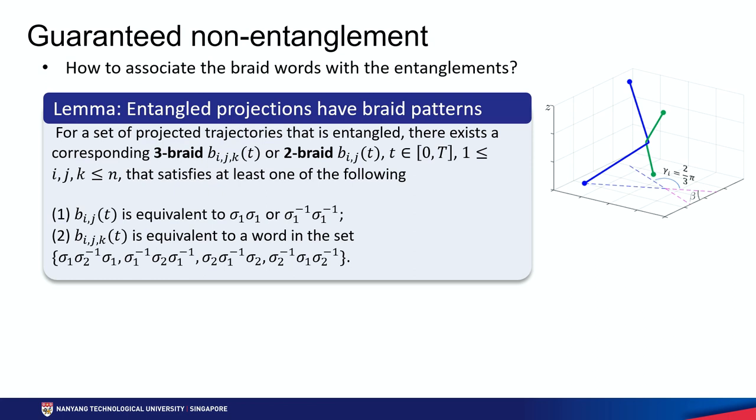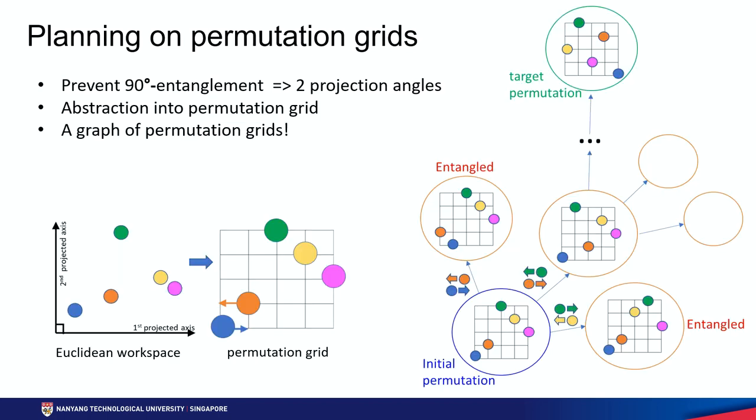There are some technical details related to the choice of projection plane and the proof; interested readers are encouraged to read our paper. Now, given that we can identify entanglements, how do we generate non-entangling paths? In this paper, we propose a method called planning on permutation grids. We extract the robots' 2D configuration space into a permutation grid, which indicates the order of the robots in each axis, as shown in the left figure.